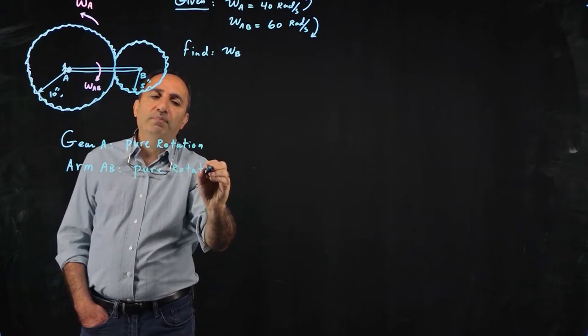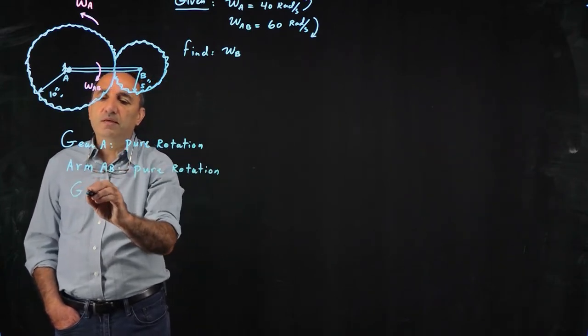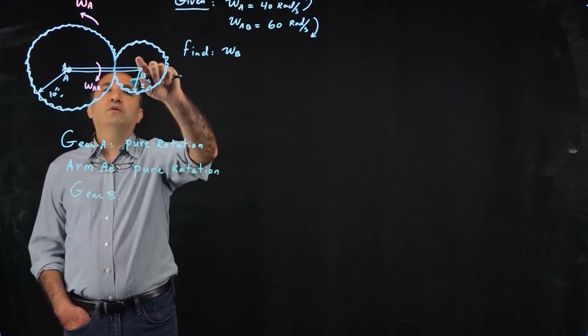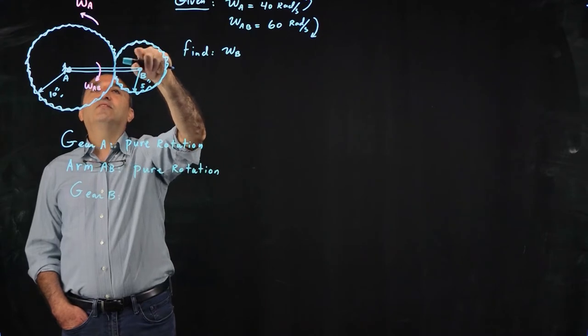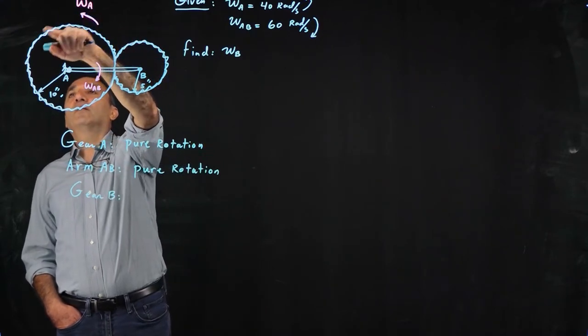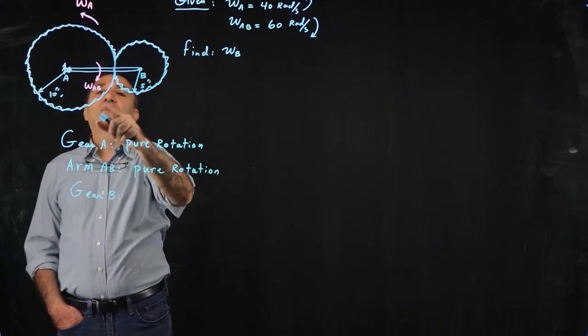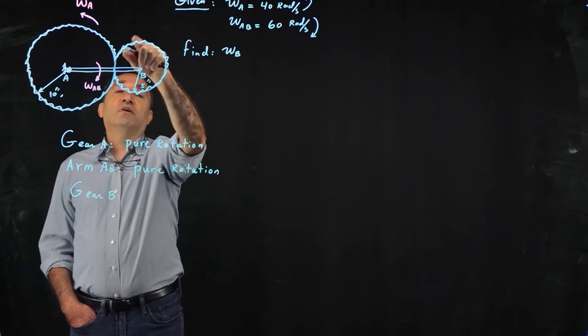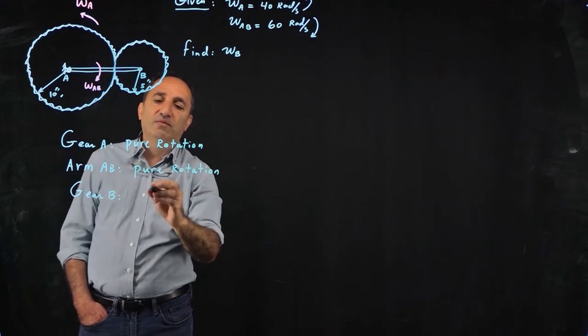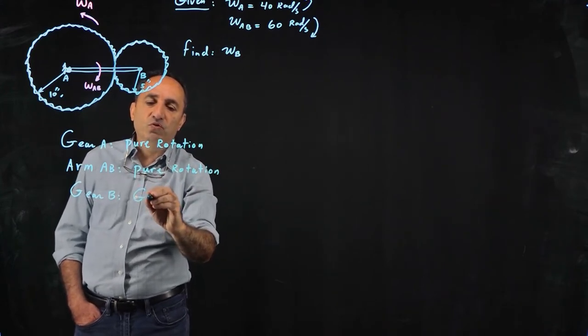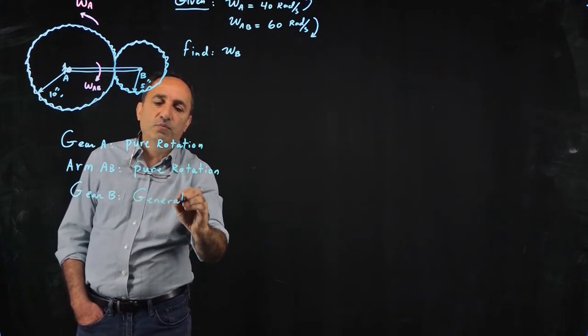But what is happening to gear B is interesting because gear B is going to rotate and at the same time goes along this gear A. So it's like planetary motion. So combination of translation and rotation, which is known as general plane motion.